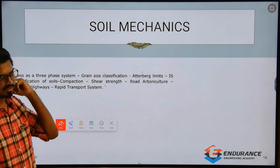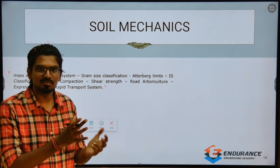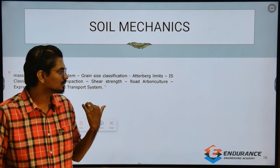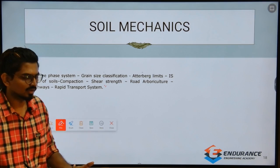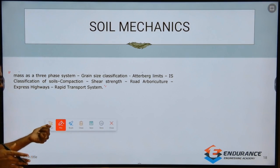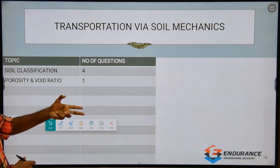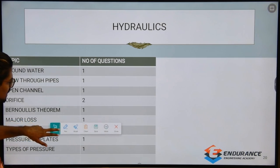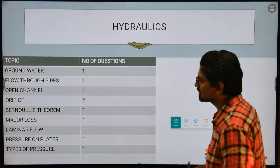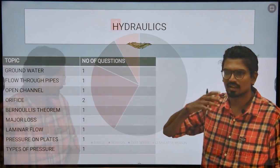Complete soil mechanics covers only these specific areas in the JDO syllabus. However, in general coaching, faculties usually take around 60 to 70 hours — minimum 50 hours — on soil mechanics. For JDO, that much time is not needed. Hydraulics includes fluid mechanics, flow through pipes, and hydraulics at the basic question level.